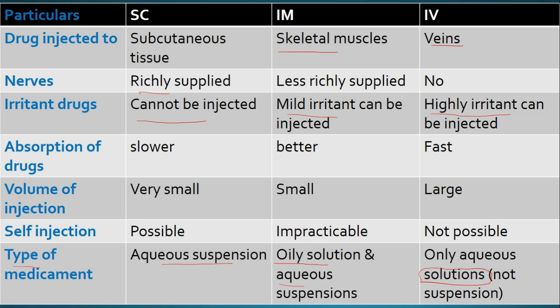We are going to the next point, that is absorption of drug. In case of subcutaneous tissue, absorption will be slower. In case of IM, absorption will be better compared to subcutaneous route. In case of intravenous, the absorption is rapid. That is why it has 100% bioavailability. IV route has 100% bioavailability.